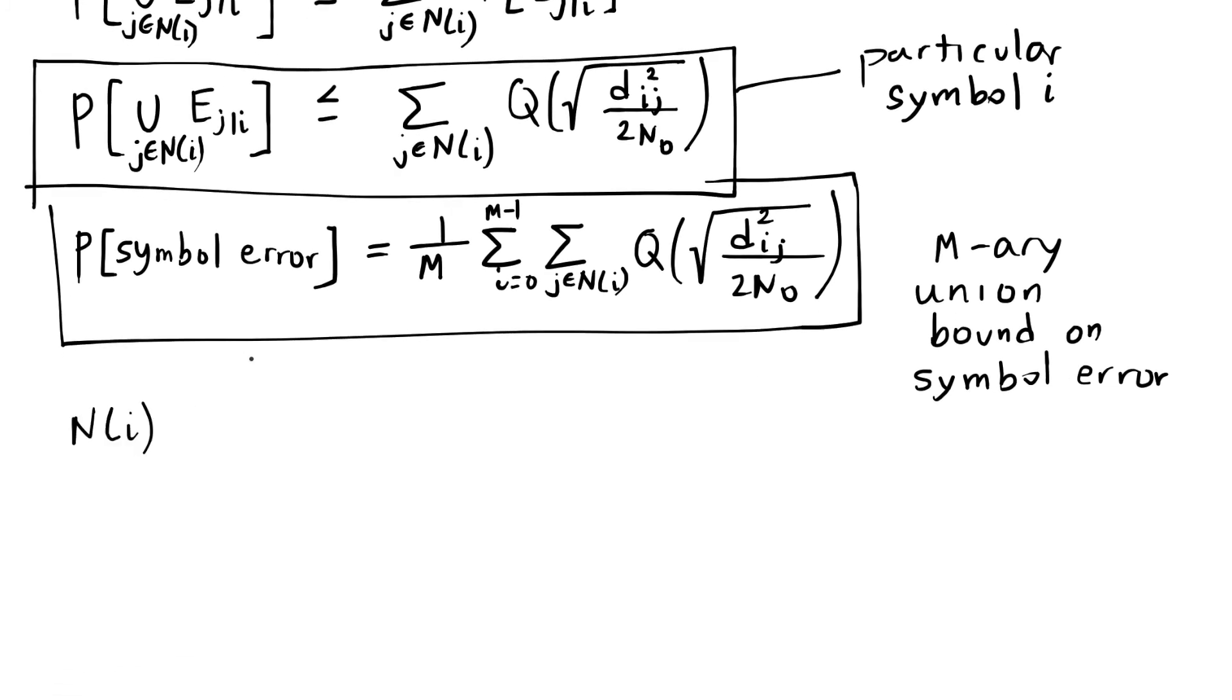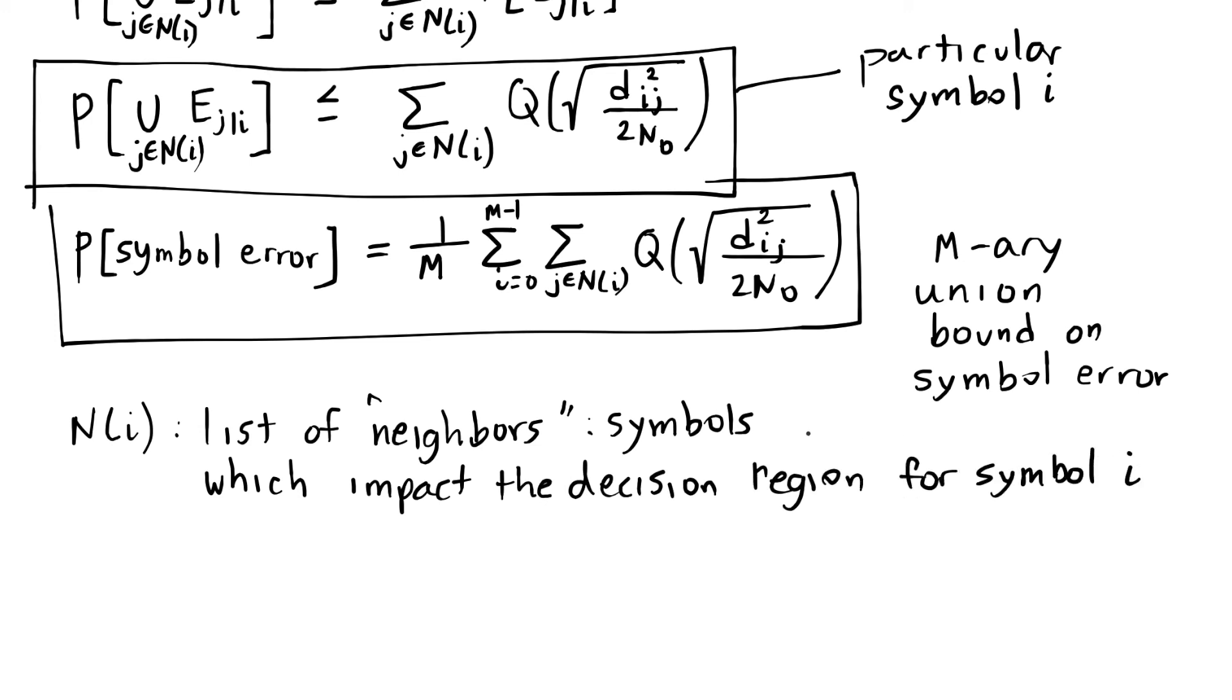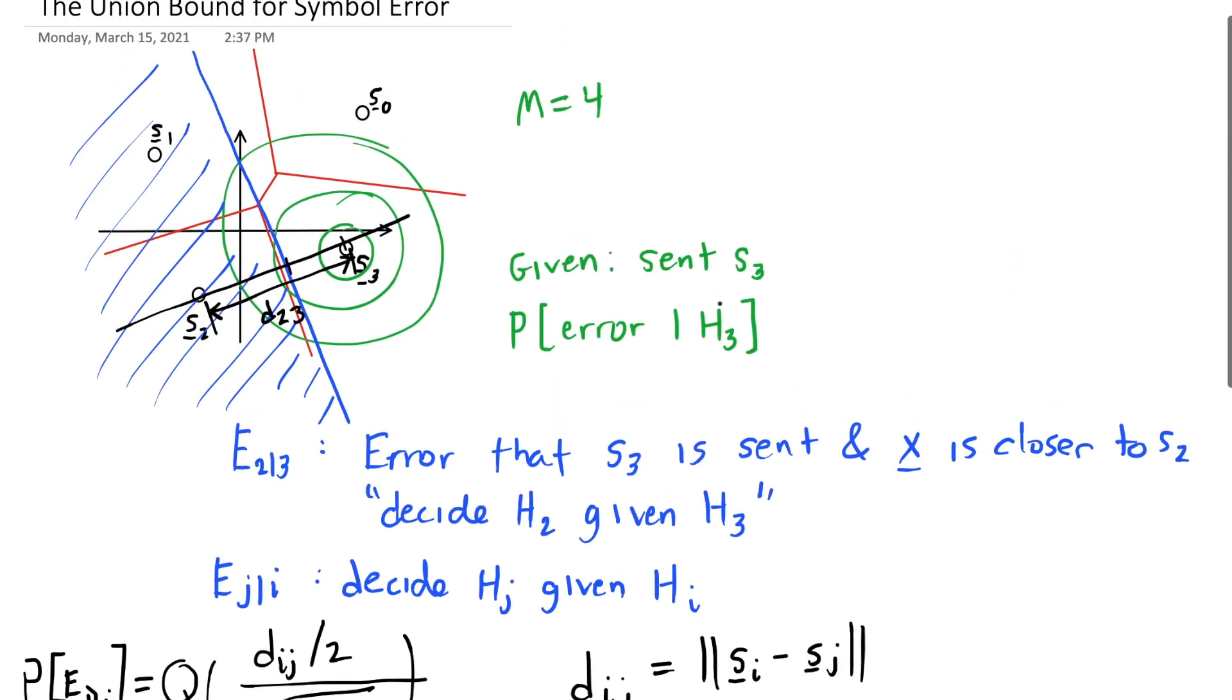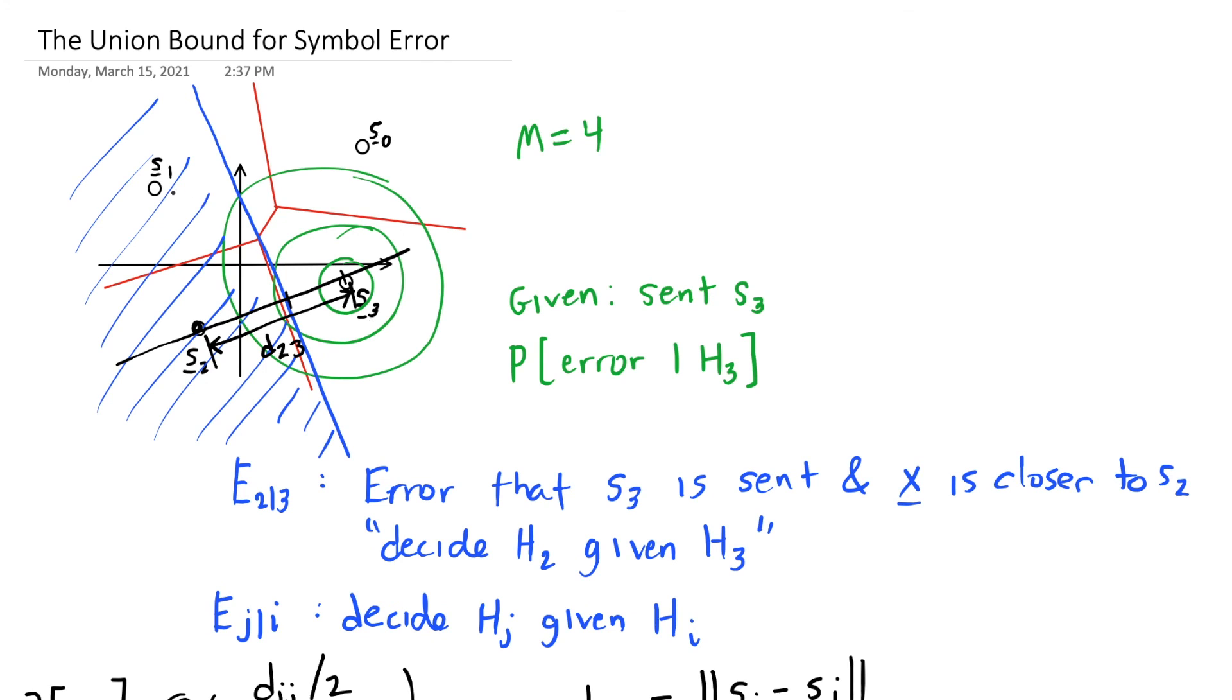What I haven't explained yet is that this Ni is the list of neighbors which impact the decision region for symbol i. For example, S2 has two neighbors: S3 and S1. But for S3, it has three neighbors: S2, S1, and S0.